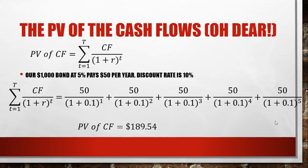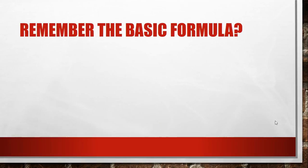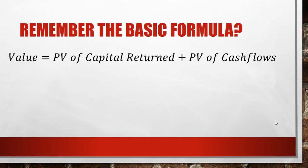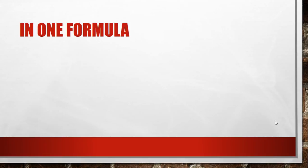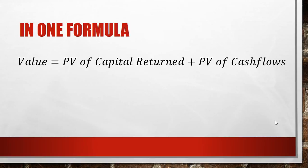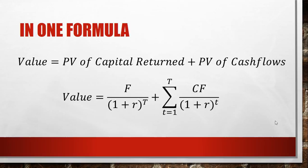We've now got the two numbers needed to calculate the value of the bond. Remember the basic formula: the value is the present value of the capital return plus the present value of the cash flows. We just add those two numbers together — if you need to rewind to see where they came from, go ahead. When you add them together you get the value of the bond, and that number should look familiar because it's what we got for the ten percent discount rate used in the example. We can put the whole thing into one formula by combining the two additions.